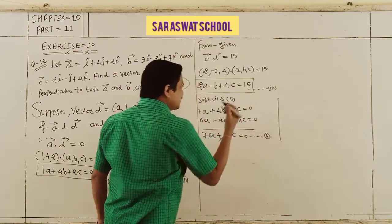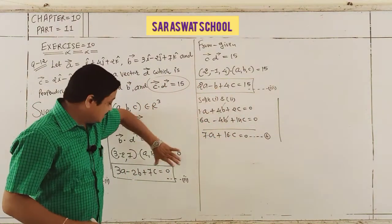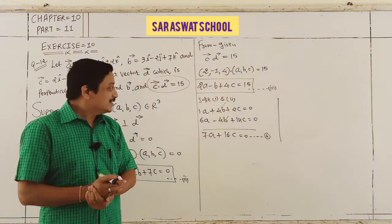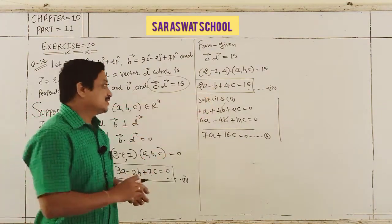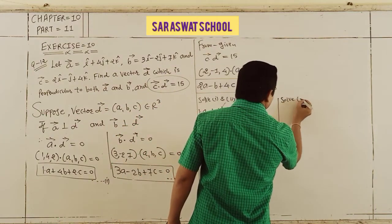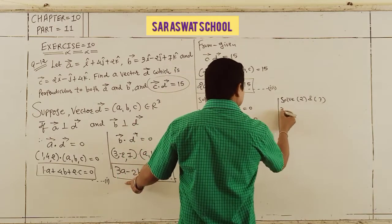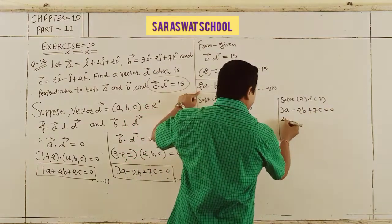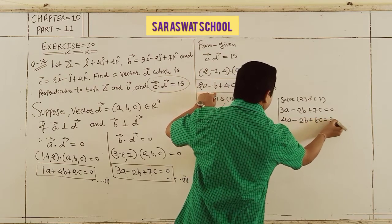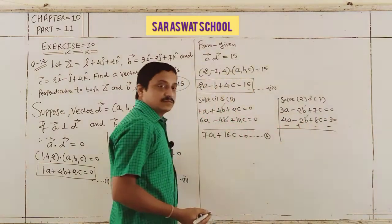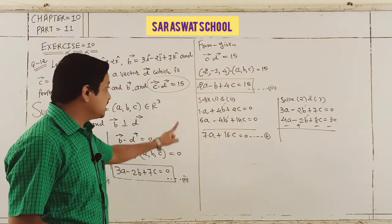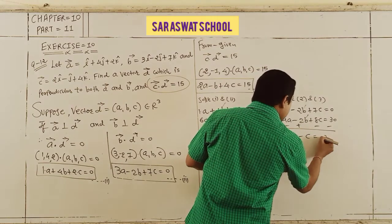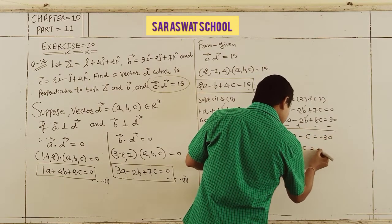Same approach: eliminate b from equations 2 and 3. Equation 2: 3a − 2b + 7c = 0; multiply equation 3 by 2: 4a − 2b + 8c = 30. Subtracting gives −a − c = −30, so a + c = 30. That is equation 5.